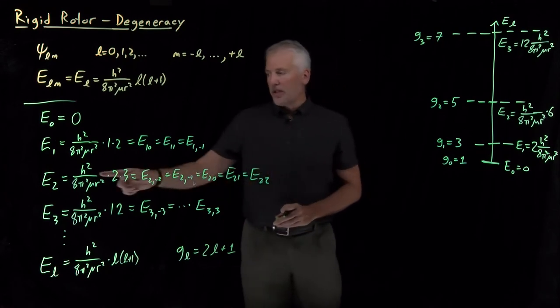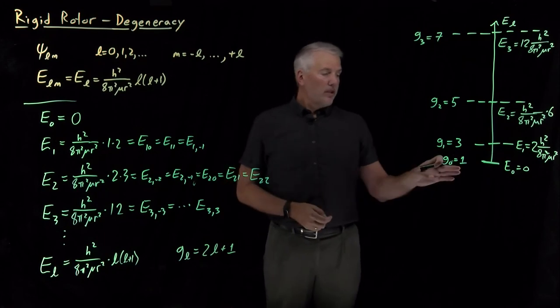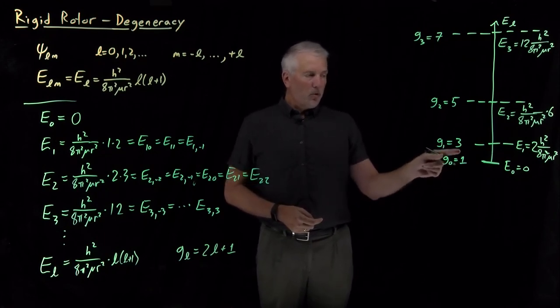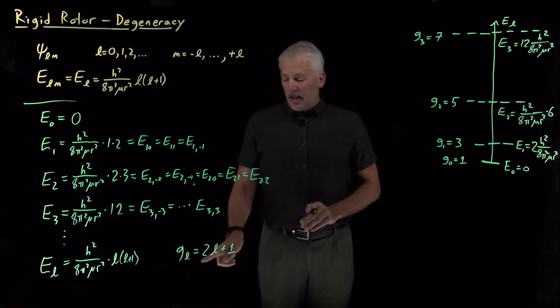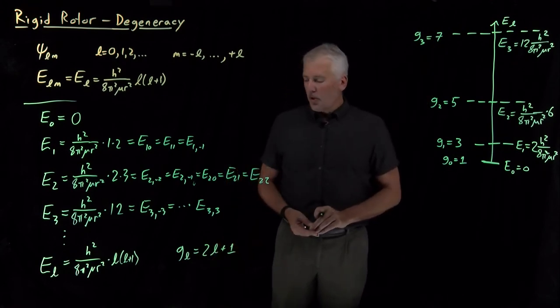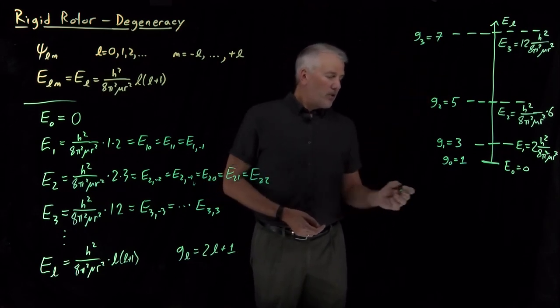So, just for example, when L equals 0, the degeneracy 2×0 plus 1 is 1. And then, the degeneracy climbs as odd numbers, it goes from 1 to 3 to 5 to 7, increasing by two for every step up the ladder we take. So, a couple of important things to point out about this energy ladder that we've begun to construct here.